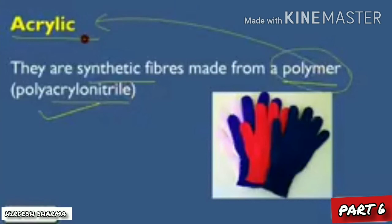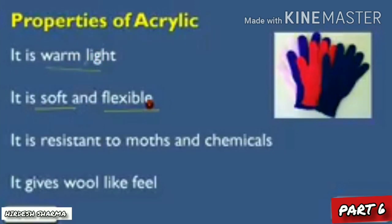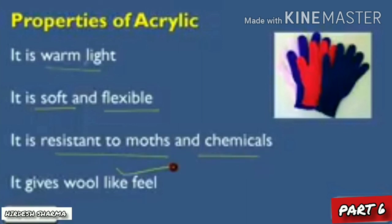As you can see in the figure, the gloves which you wear in winters are actually made up of acrylic. Its properties include being warm and light, soft and flexible. It is resistant to molds and chemicals, and it gives a wool-like feeling — warm and soft.